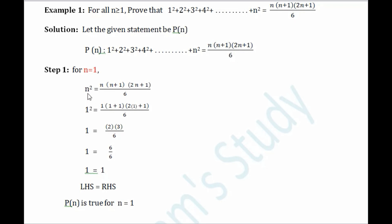We replace all n's by 1. On the left hand side, 1² = 1. On the right hand side, (1)(1+1)(2×1+1)/6 = (1)(2)(3)/6 = 6/6 = 1. So LHS = RHS, and therefore it is proved that the given statement P(n) is true for n = 1.